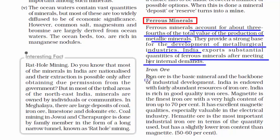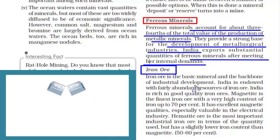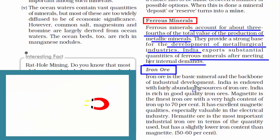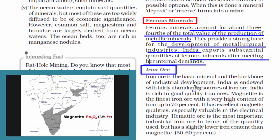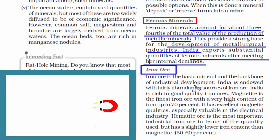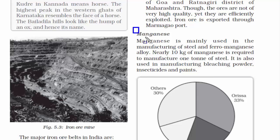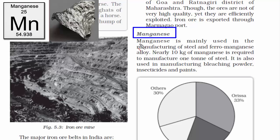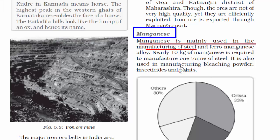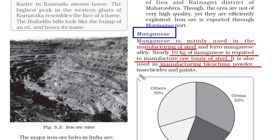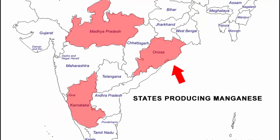Metallurgical industries are those that deal with the properties of metals and their production and purification — they give minerals economic value. India also exports a lot of ferrous minerals after having sufficient stock for itself. Under ferrous minerals, the first we will read about is iron ore. The second mineral is manganese, which is mainly used in the manufacturing of steel. An estimated 10 kg of manganese is required to manufacture one ton of steel. It is also used in manufacturing bleaching powder, insecticides, and paints. Orissa is the largest producer of manganese ores in India.